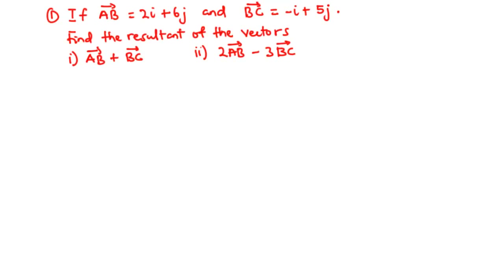Example 1: If vector AB is equal to 2i plus 6j and vector BC is equal to negative i plus 5j, find (i) the resultant of the vectors AB plus BC, and (ii) 2 times vector AB minus 3 times vector BC.